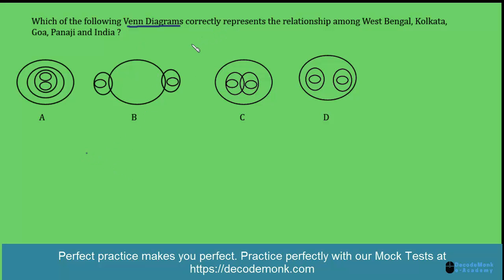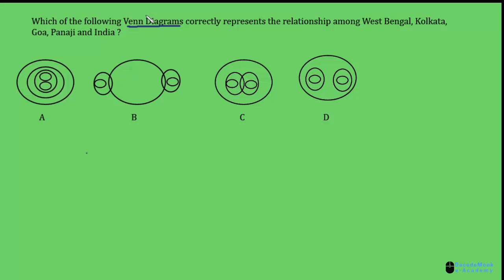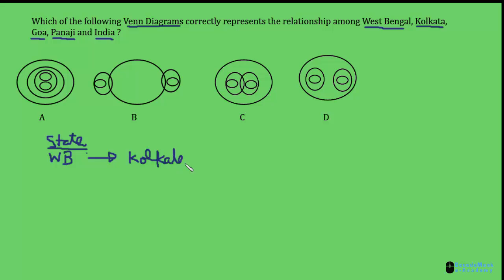Venn diagrams represent the relationship between different things. Here you are asked: which of the following Venn diagrams correctly represents the relationship among West Bengal, Kolkata, Goa, Panaji, and India? These are names of places — West Bengal is a state whose capital is Kolkata, and Goa is a state whose capital is Panaji.